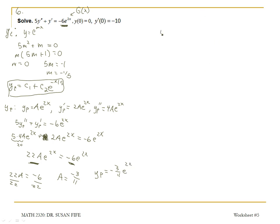So that tells me my particular solution is negative 3 elevenths e to the 2x. And my general solution is my complementary solution plus my particular solution. My general solution is c1 plus c2 e to the negative x over 5 minus 3 elevenths e to the 2x. That's the general solution.